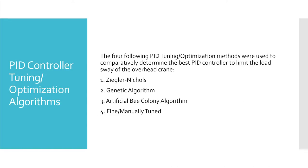Various types of PID controller tuning and optimization systems were explored via simulation using MATLAB and Simulink. The goal of the implemented PID controller is to control the displacement of the trolley with the intended result to minimize the angular position of the load as much as possible. The four methods include the Ziegler-Nichols method, the genetic algorithm, the artificial bee colony algorithm, and a method which involved fine tuning.